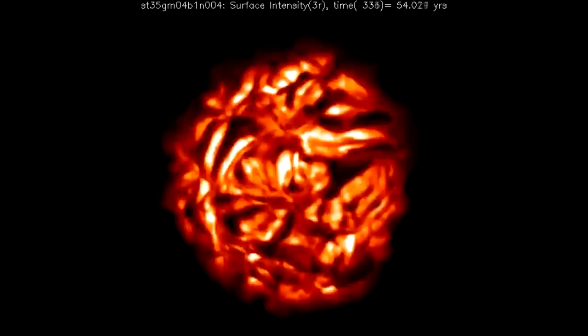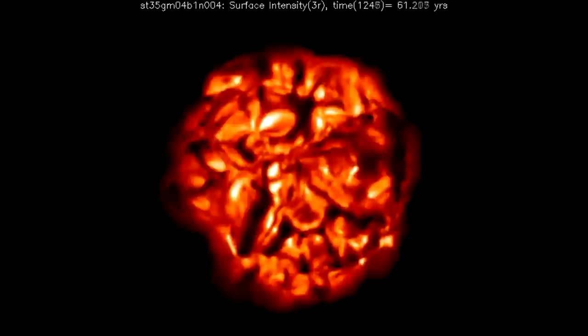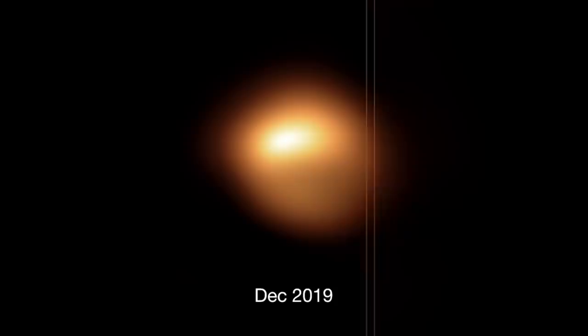But that still doesn't explain a mechanism. Betelgeuse has this massive convectively driven atmosphere which is constantly boiling and convecting and turning over. We get hot spots and we get cold spots, and perhaps they had too many cold spots.